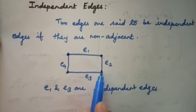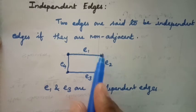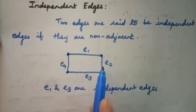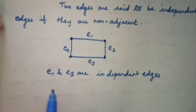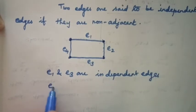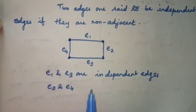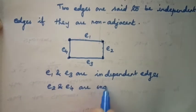E2 is adjacent with E3 and E1. E2 and E4 are not adjacent. So, you can say E2 and E4 are independent edges.